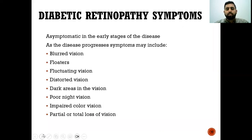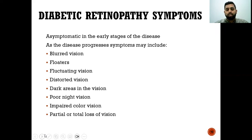What are the symptoms of diabetic retinopathy? We need to remember that at the early stage this disease is completely asymptomatic, and symptoms only arise once the disease progresses to the severe stage. Symptoms include blurring vision, floaters, fluctuating vision, distorted vision, dark areas of vision, impaired color vision, or partial or total loss of vision.